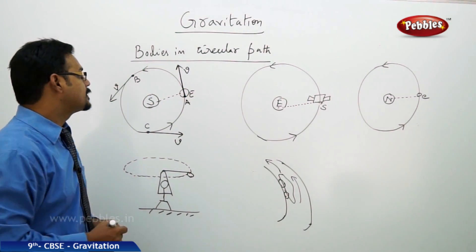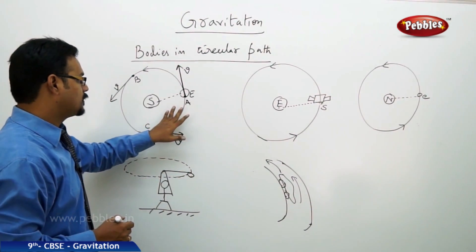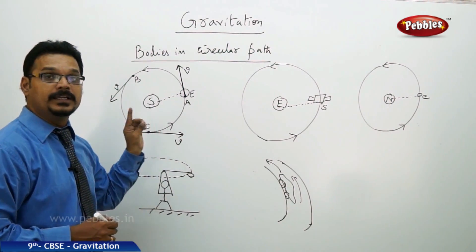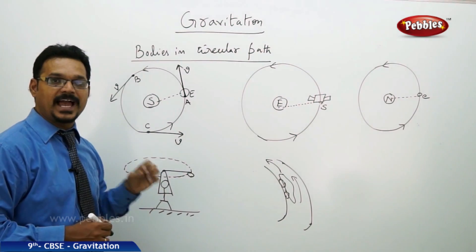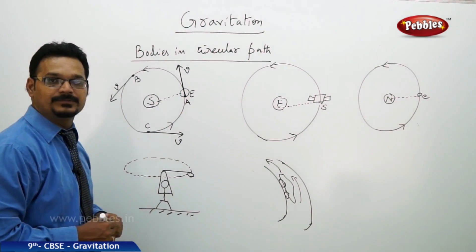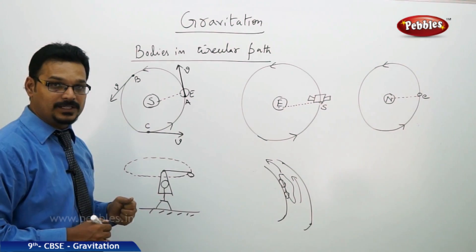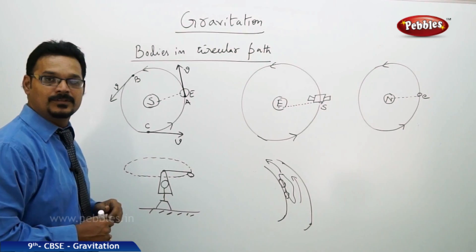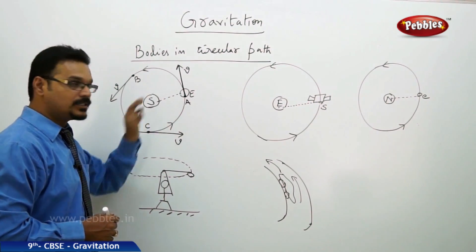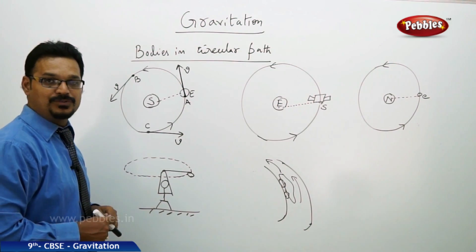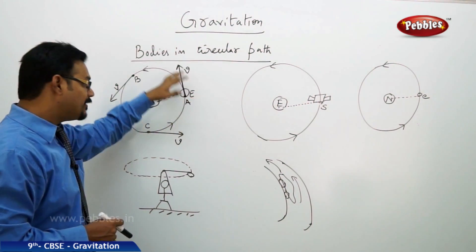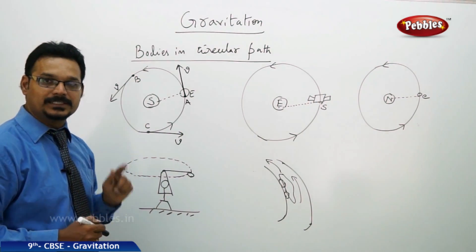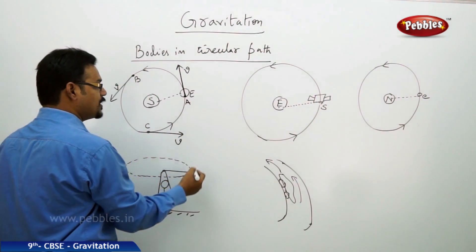But the question is: how does the Earth or the body continue to stay in the circular path? It is because some force is acting on this body — a force applied by a relatively massive body, the Sun. The Sun is applying a force on the Earth, and because of that force the Earth does not leave the path. It stays in the circular path. That force is called centripetal force.